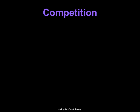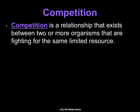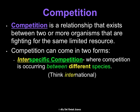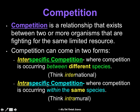Another type of relationship is competition — when two or more organisms fight for the same limited resource or niche. It comes in two forms. Interspecific competition is competition between different species — think 'international' meaning different nations. An example would be a cheetah and a lion competing for elk as food. Intraspecific competition is competition within the same species — think intramural sports at college, where different teams from the same school compete. An example would be two bears competing for the same fish, or two lions competing for the same elk.